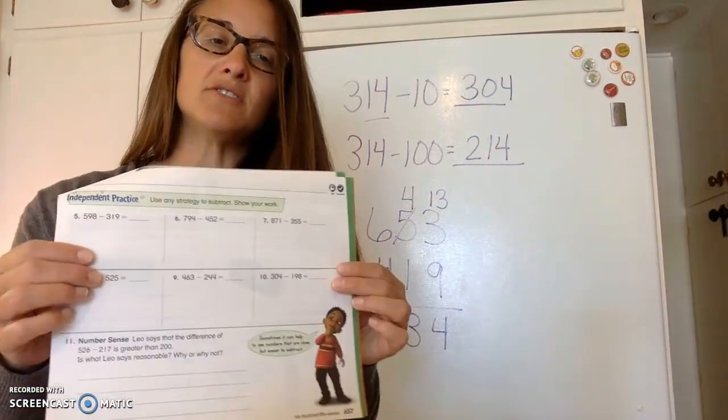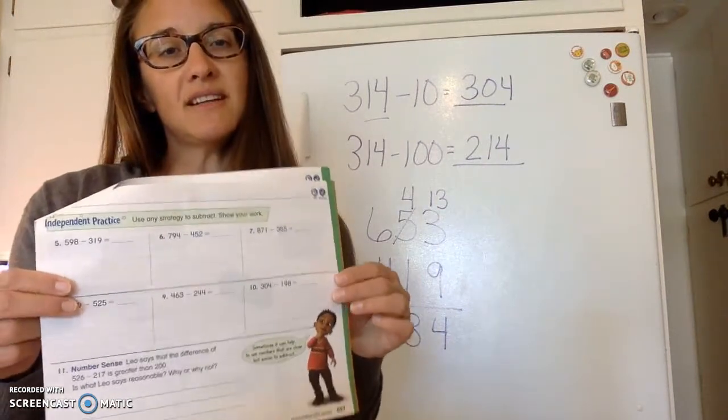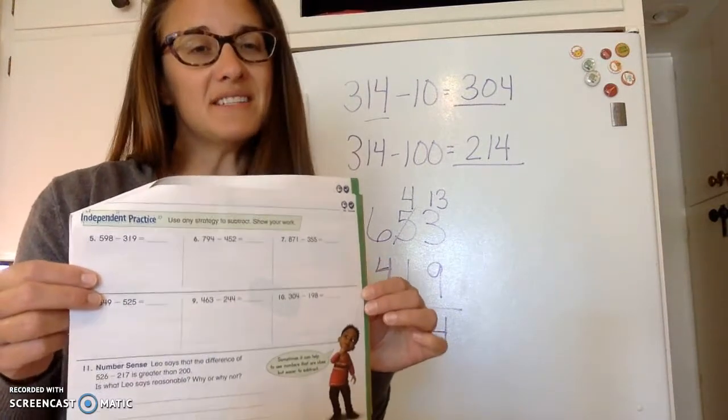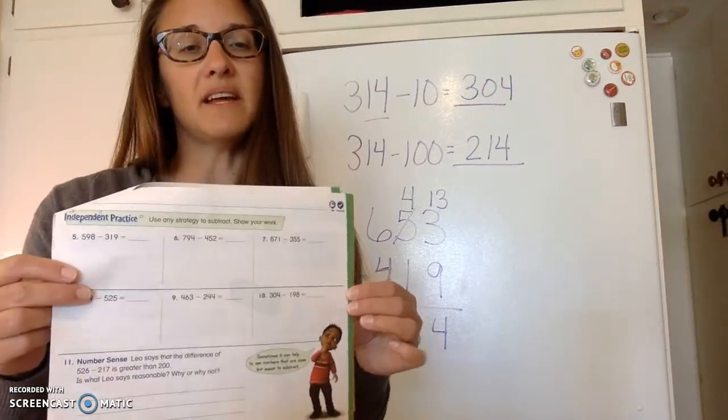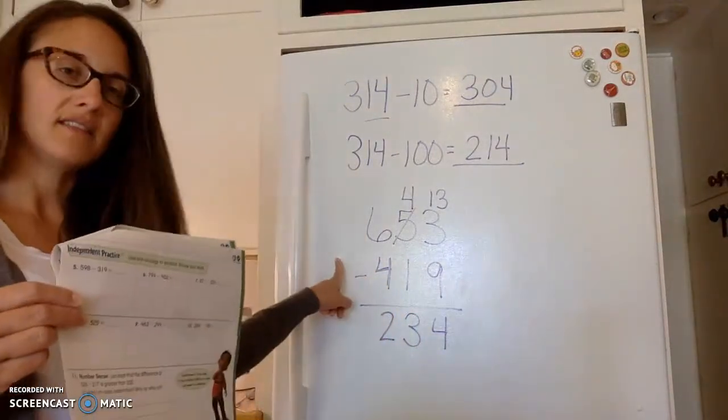The next one it says you can show me a strategy any way that you like to do it. When we were doing the addition, for some of you this is really easy to do mentally, but for subtraction I find that it's harder to do that in your head and I'd really like you to line up your numbers nicely and show me using this strategy.